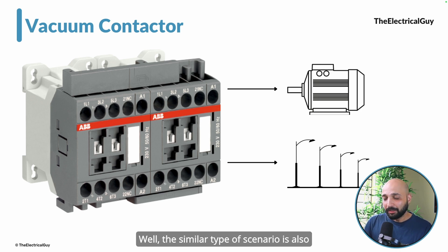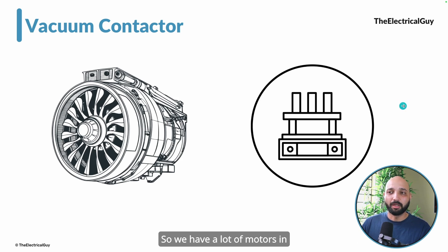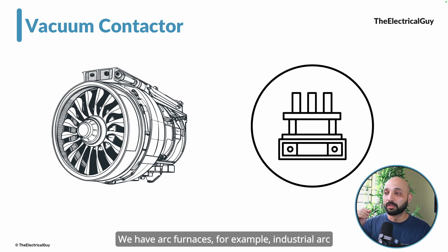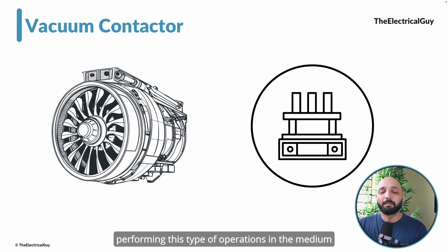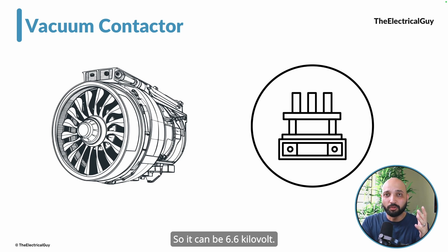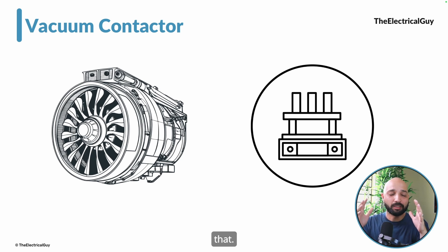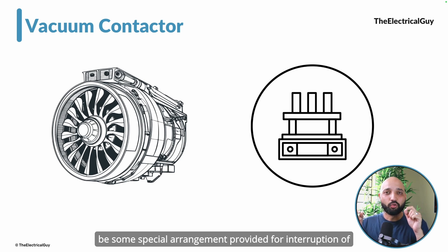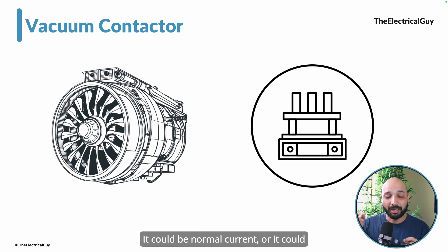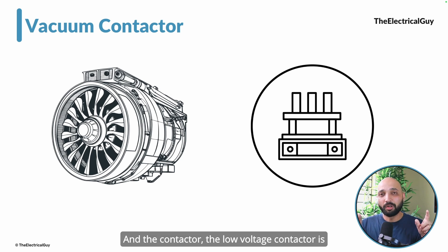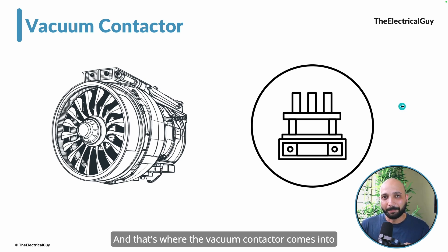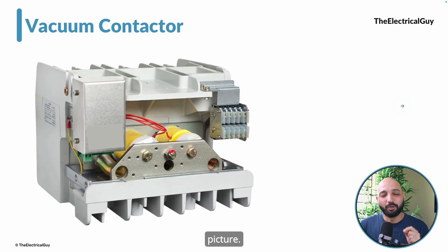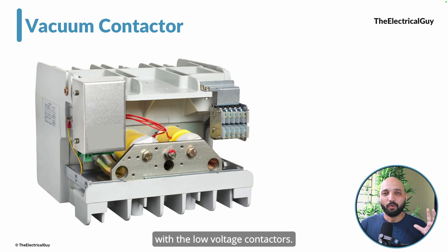A similar scenario exists in medium voltage systems — above 1000 volts. We have motors, arc furnaces, and other loads that need frequent switching. However, the low voltage contactor is not capable of handling medium voltage, which can be 6.6 kV or 12 kV. At higher voltages, a special arrangement is needed for current interruption. The low voltage contactor has no special interrupting medium, and that's where the vacuum contactor comes into picture.